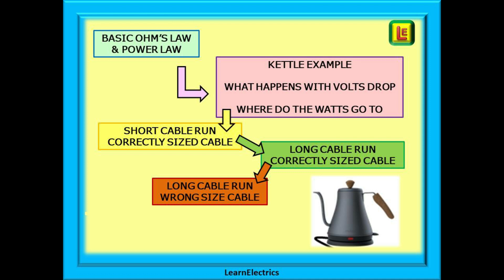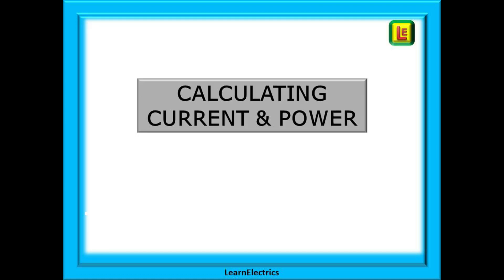We will use an electric kettle as an example across three related scenarios. In scenario one, the kettle is plugged into a socket close to the consumer unit — a short cable run with a correctly sized cable. In scenario two, we look at a long cable run with the same correctly sized cable. Finally in scenario three, we plug the kettle into a circuit with an undersized cable to see how it affects performance.